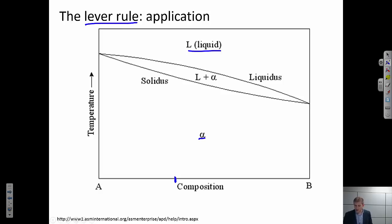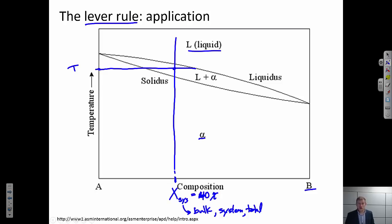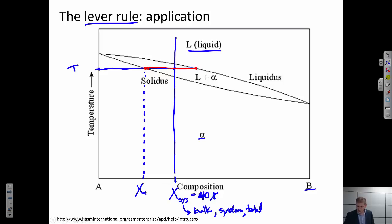Let's say the bulk composition — sometimes called the system, total, or whole composition — is 40 percent component B. In all these cases we're picturing a system as a box containing some material, and we want to know the composition of everything in that box. At some temperature up here we are in the two-phase region, so the first thing to do is draw a tie line, which gives us important information: the composition of the solid present and the composition of the liquid present.